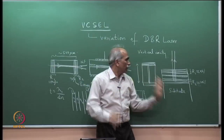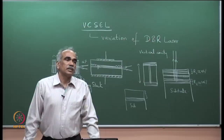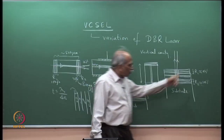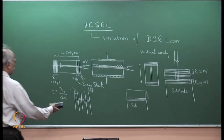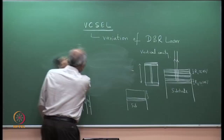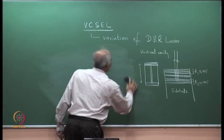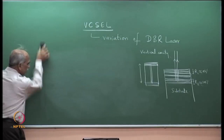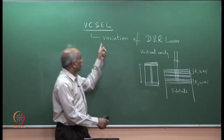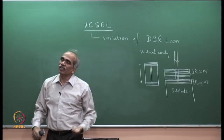This is the vertical cavity surface emitting laser — VCSEL. There are several design considerations involved. What kind of reflectivity do we need? Some numbers will make it clearer. The basic idea of realizing a VCSEL is straightforward: it is simply a variation of a DBR laser where you have rotated the cavity 90 degrees so that output comes from the surface.